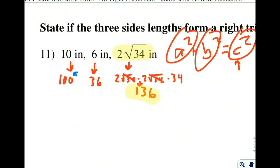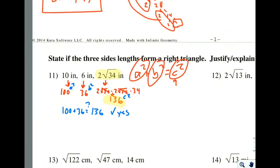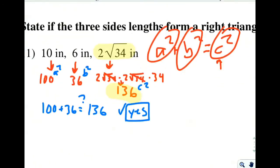This I will make a squared, this I will make b squared, and this I will make c squared. Does 100 plus 36 equal 136? Why, yes it does. So state if they form a right triangle, yes they do. The reason is because it meets the conditions of the Pythagorean theorem.